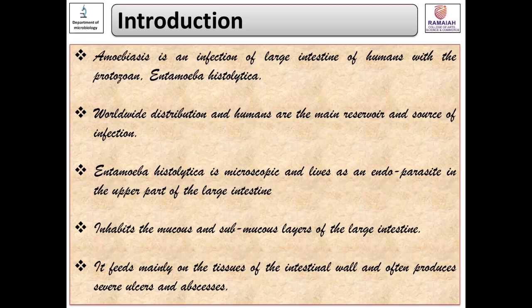Before we begin, let's brush up on what protozoans are. Protozoa are basically single-celled eukaryotes — they can either be free-living or parasitic, and they feed on organic matter such as other microorganisms, organic tissues, and certain debris of tissues. These protozoa were earlier regarded as single-celled animals because they possessed certain characteristics similar to animals, like motility and predation.